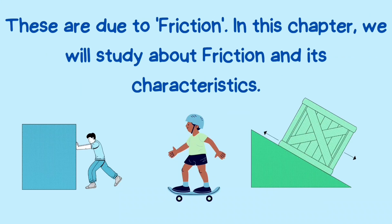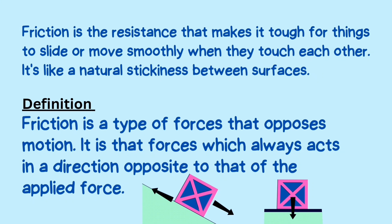In this chapter, we will study about friction and its characteristics. Friction is the resistance that makes it tough for things to slide or move smoothly when they touch each other. It's like a natural stickiness between surfaces. Friction is a type of force that opposes motion — it always acts in a direction opposite to that of the applied force.